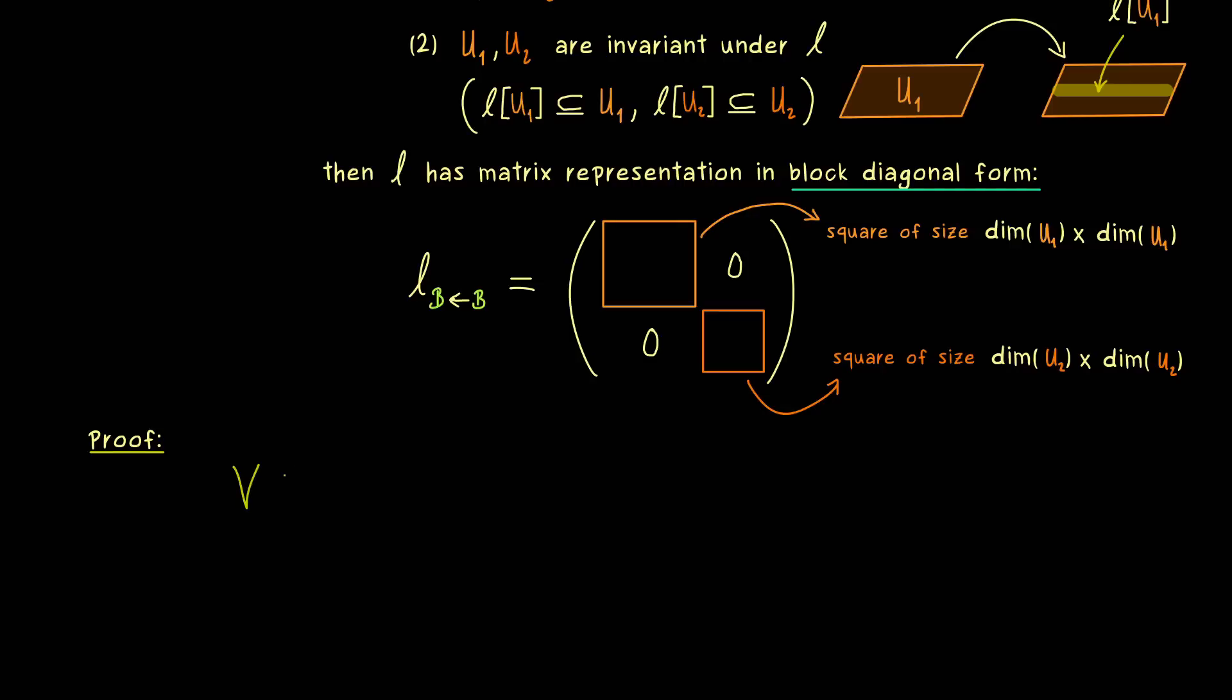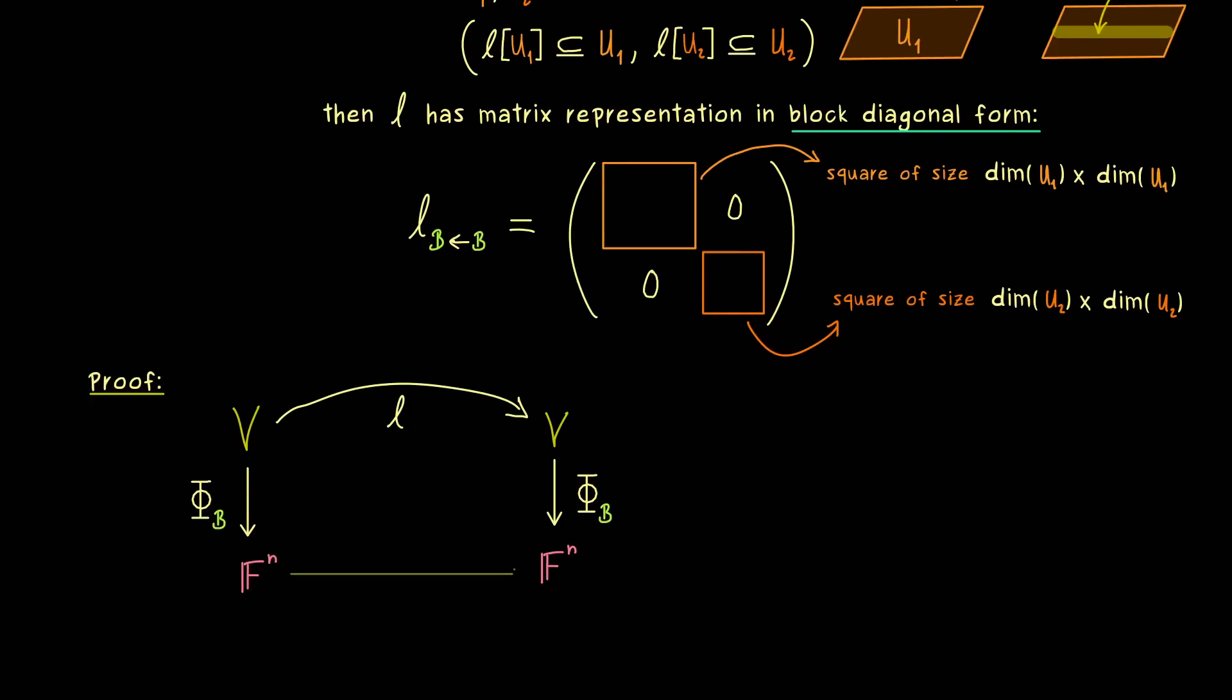As always for the matrix representation, it's good to look at the picture of the corresponding maps. Here we have our map L, and we can translate the abstract vector space V into the concrete one given by F^n. This is done by a basis isomorphism given by a map Phi_B. What we want is to choose the same basis B on the left and right hand side, and then we simply get our matrix representation on the lower level.